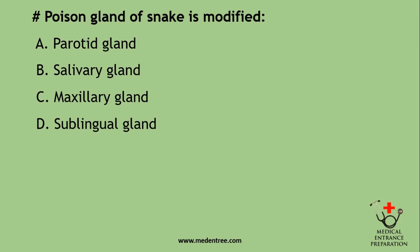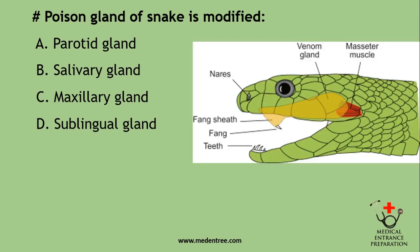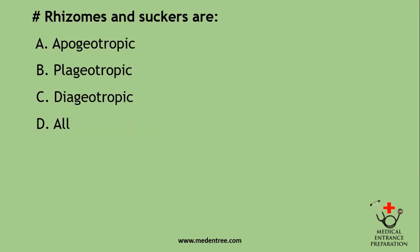The poison gland of a snake is a modified: parotid gland, salivary gland, maxillary gland, or sublingual gland? The poison gland is found in the maxillary region and is homologous to the parotid gland of mammals. If parotid gland is not given as an option, the answer can be salivary gland, because parotid glands are modified salivary glands. So the poison gland of a snake is a modified parotid gland.